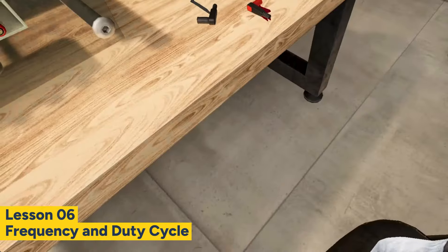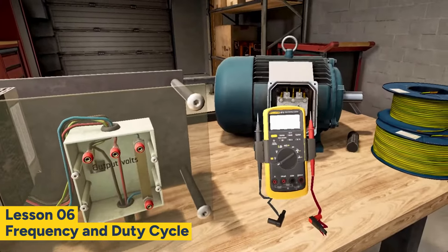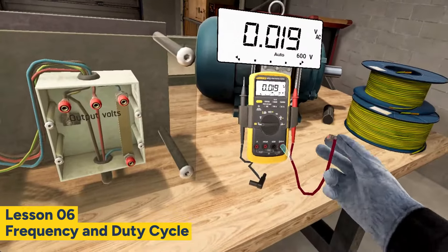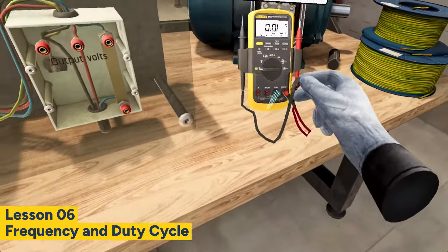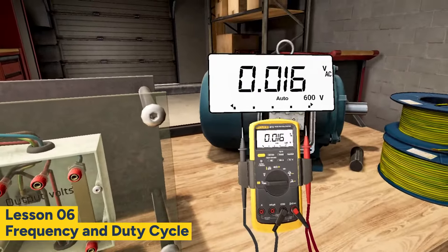Let's go ahead and measure the input voltage. Set the multimeter to the Volt's AC function and connect the test leads. Now take the probes and connect them to the test points at the input box.